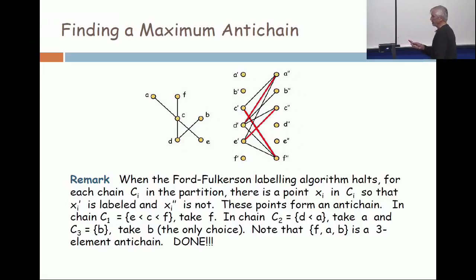The claim is that if you take any one of the chains, there's always a point in the chain where the prime point is labeled and the double prime point is not. And then those points form an antichain. All right, now let's see why.